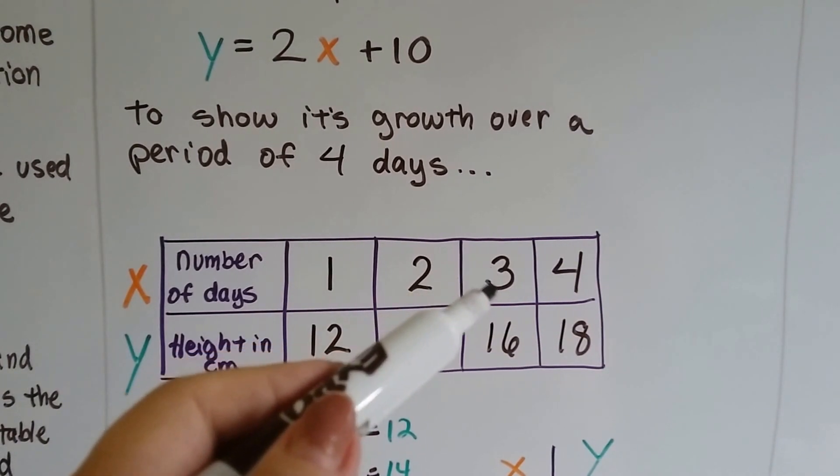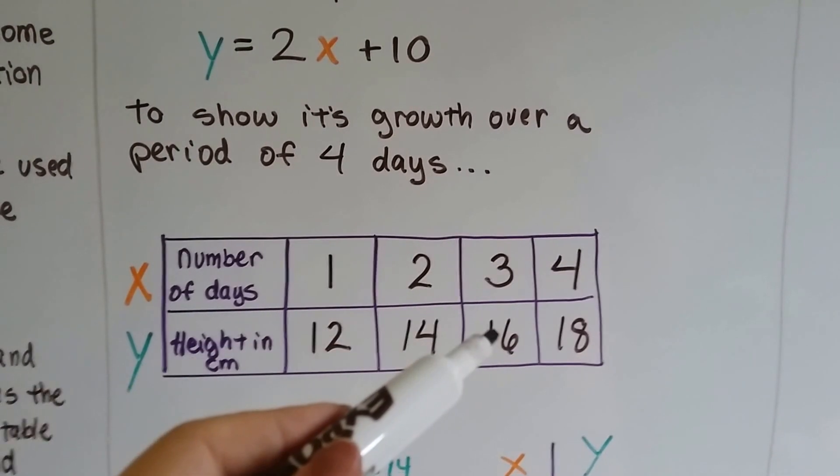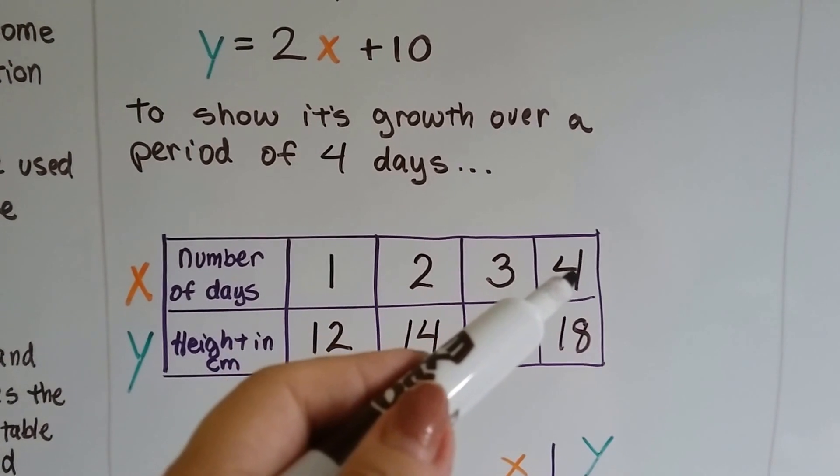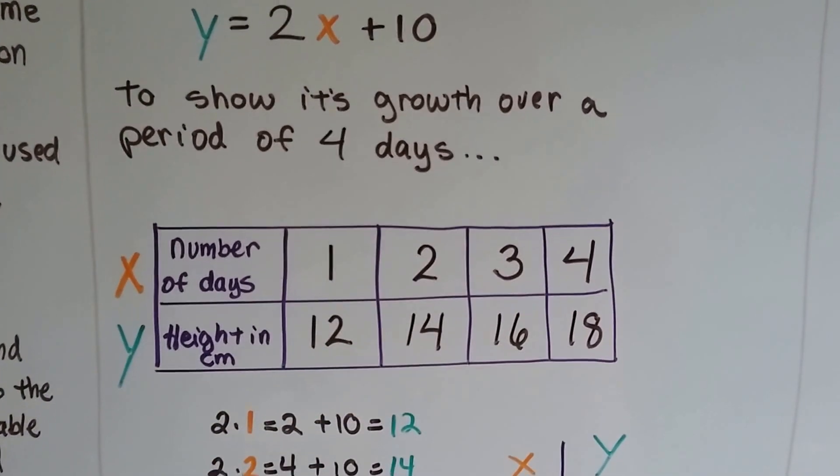And then the third day it was 3 times that 2 plus the 10, and now it's 16. And the fourth day it's 4 times 2 plus 10 is 18.